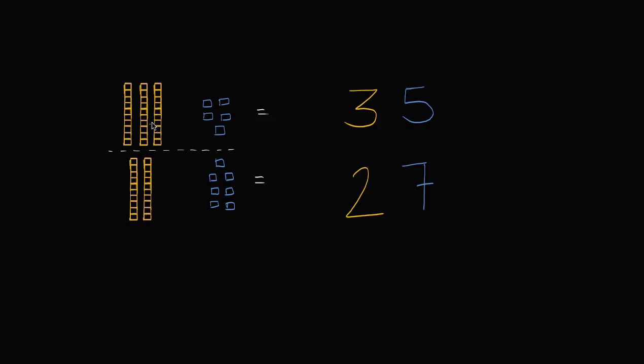So I have two numbers here. The top number, I have one, two, three tens, and I have one, two, three, four, five ones. Three tens, five ones, or 35.